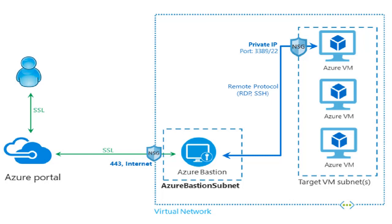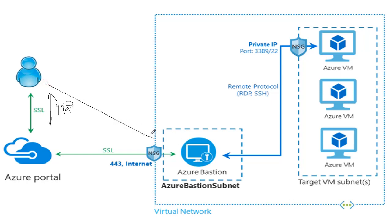Before we get started with the troubleshooting part, let's try to understand the data flow. Let's consider you are a user who tries to log in to the Azure portal. This communication happens on port 443 — it's SSL traffic. Once you're logged into the portal, you navigate to a VM to which you want to RDP or SSH, click on the connect button, type in your credentials, and click OK. When you click OK, your browser gets redirected to a Bastion URL through which you will be able to connect to the Bastion directly from the internet on port 443.